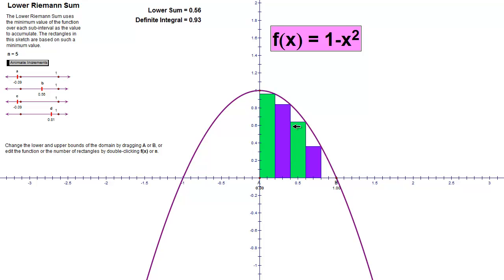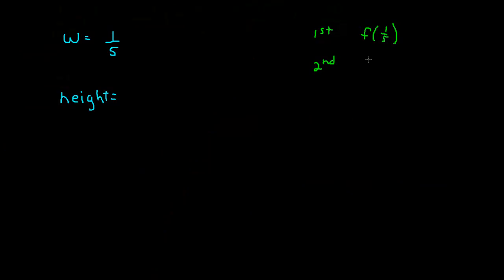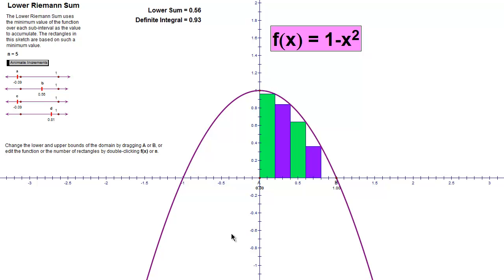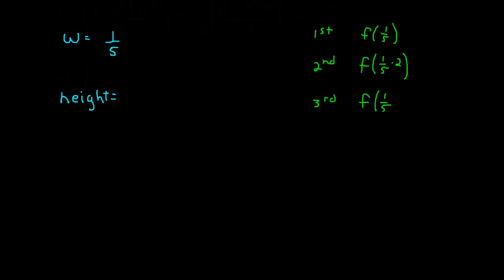f of 2 fifths tells us the height of the second rectangle. If I really want f of 2 fifths, isn't that the same as 1 fifth multiplied by 2? The third rectangle is f of 1 fifth times 3. Here's 1 fifth, here's 2 fifths, here's 3 fifths. The fourth rectangle is going to be f of 1 fifth times 4. And to be complete, the height of my fifth rectangle is 1 fifth times 5.